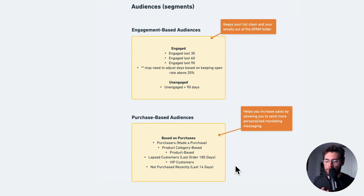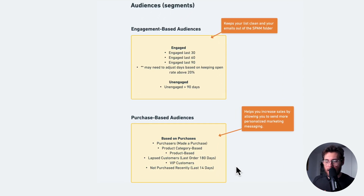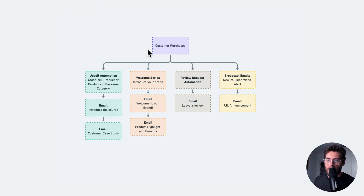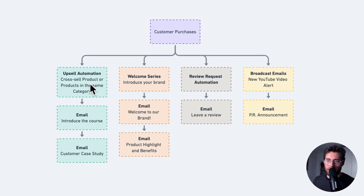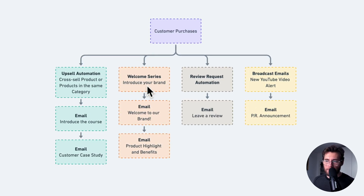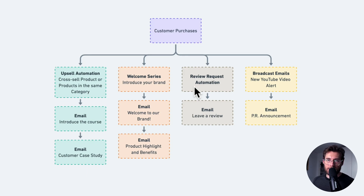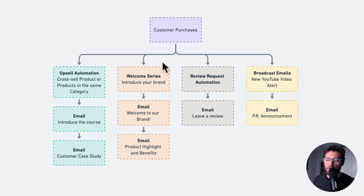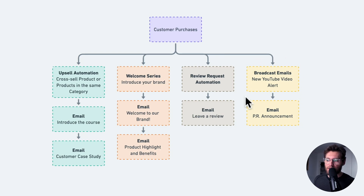The last audience is people to exclude from broadcasts. When a customer buys from your website, they get added into automations — like an upsell automation, a welcome series, and a review request. While they go through these automations, you'll also be sending broadcast emails. In most cases, you want the automations to be the focus, so you probably want to set up an audience of people to exclude from broadcast emails — those currently active in these automations.